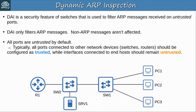So in this network, we should configure the uplink interfaces as trusted but leave the end-host interfaces as untrusted. SW2's interface connected to SW1 could also be left as untrusted, because it is a downlink leading toward the end hosts — either design will work. In Cisco's documentation, they recommend that all interfaces connected to switches, routers, etc. are configured as trusted.